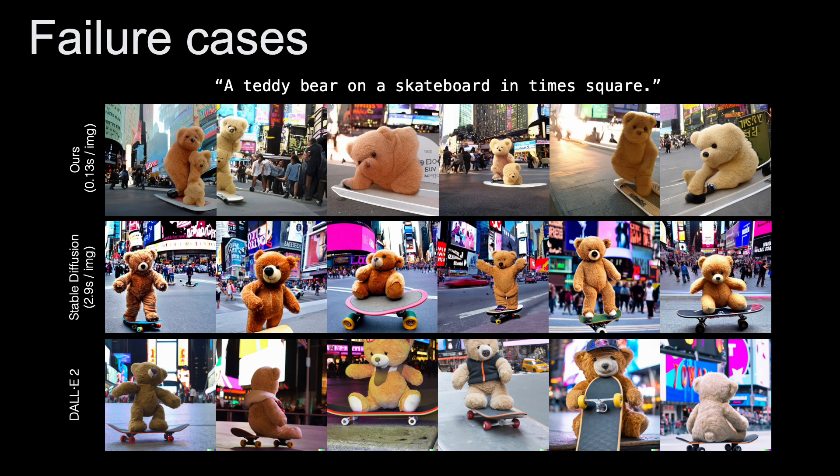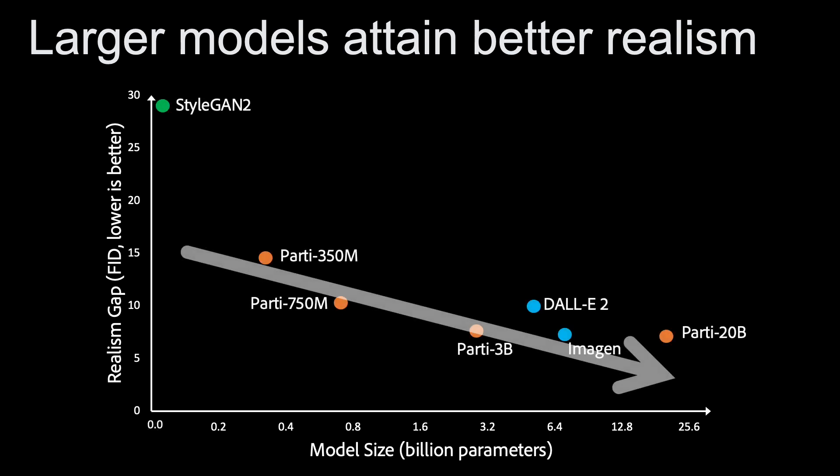While GigaGAN has shown significant improvement in image synthesis, it still struggles to capture low-level structural details for some prompts. We suspect that the limitations in GigaGAN's synthesis ability are due to insufficient model capacity, and we anticipate that further scaling will improve the results.